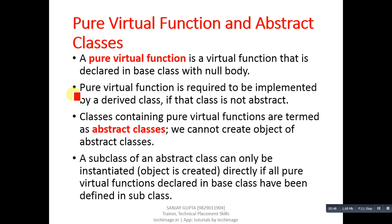Whenever we declare any pure virtual function in the base class, that pure virtual function must be defined by its derived class. Classes containing pure virtual functions are termed as abstract classes, and we cannot create objects of abstract classes. If you implement any pure virtual function in a particular class, that class becomes abstract and you cannot create an object of it, because the definition of the pure virtual function is not available, so the compiler will not perform any operation.